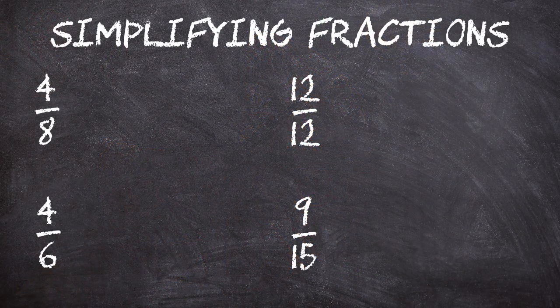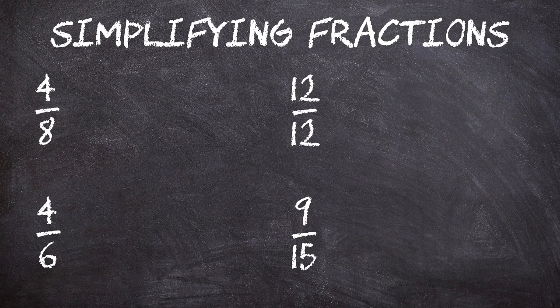Here are some fractions that we can simplify. Simplifying is basically reducing a fraction down to its lowest terms. Simplifying does not change the value of the fraction. The result will be an equivalent fraction. To do this, we just need to divide the numerator and the denominator by the same whole number — the largest whole number that we can.